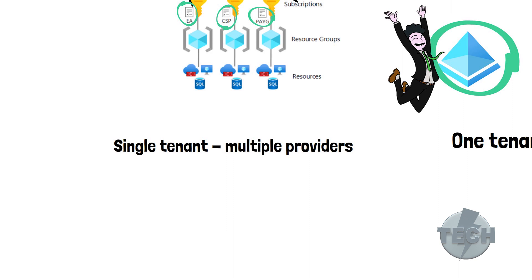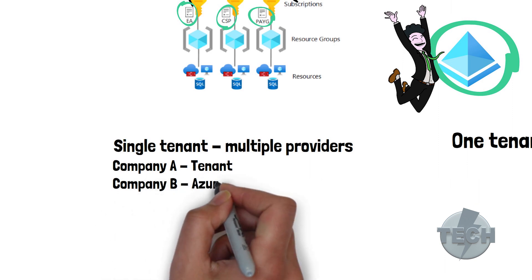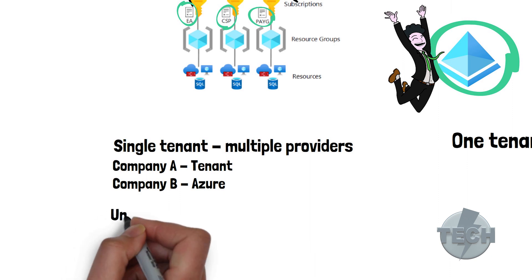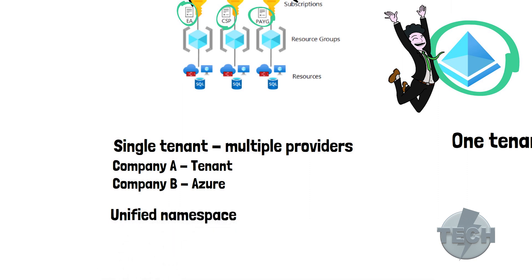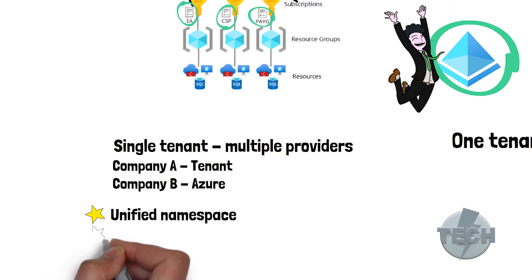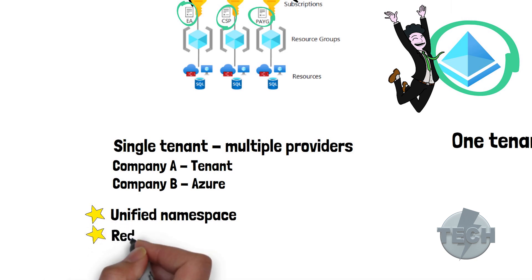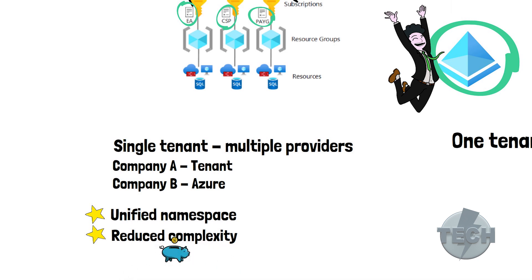With a single tenant setup — and I also refer to having another party who handles your tenant while your own IT team is responsible for Azure — some of the benefits include always having a single Microsoft cloud identity for all the users, and the UPN remains the same as the email address. This allows for reduced complexity and interoperability between all the Microsoft clouds, which translates to less IT expenditure as it's easier to manage and get a grasp on only one tenant.